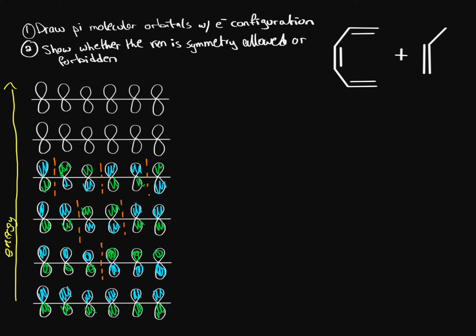The next one has four nodes using the same splitting method: node here, node here, node here, node here — up to four anti-bonding interactions, with only one bonding interaction remaining. The highest energy molecular orbital has nodes between every single pi orbital, giving complete destructive overlap as the phases keep switching. This is the least stable, completely anti-bonding molecular orbital.